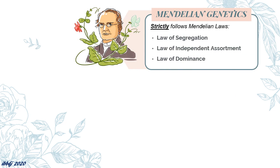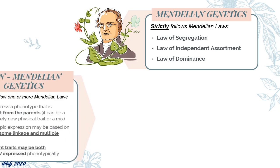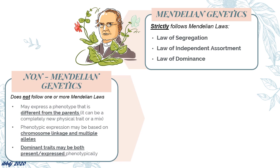Today, we are going to talk about non-Mendelian genetics. Non-Mendelian genetics are the patterns of inheritance that do not follow the Mendelian laws, namely the law of segregation, law of independent assortment, and law of dominance. Non-Mendelian inheritance will produce offsprings with different phenotypes as compared to the parents.